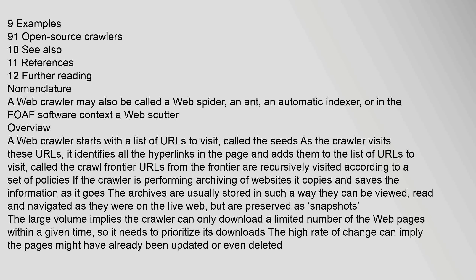A web crawler may also be called a web spider, an ant, an automatic indexer, or in the FOAF software context, a web scutter. A web crawler starts with a list of URLs to visit called the crawl frontier. URLs from the frontier are recursively visited according to a set of policies. If the crawler is performing archiving of websites, it copies and saves the information as it goes. The archives are usually stored so they can be viewed, read, and navigated as they were on the live web, but preserved as snapshots. The large volume implies the crawler can only download a limited number of web pages within a given time, so it needs to prioritize its downloads.